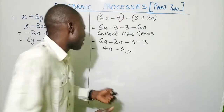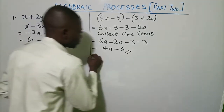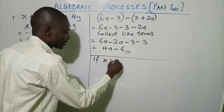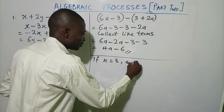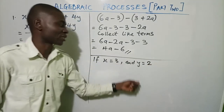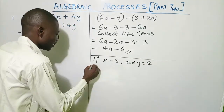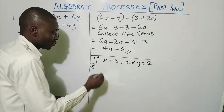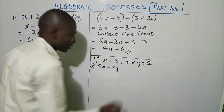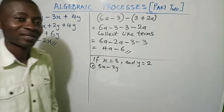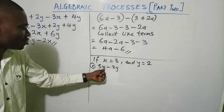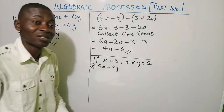Let's look at another aspect. Sometimes you are given values — for instance, if x equals 3 and y equals 2, the question asks: find the value of 5x minus 2y. All you need to do is substitute — replace wherever you see the variable with its given value.